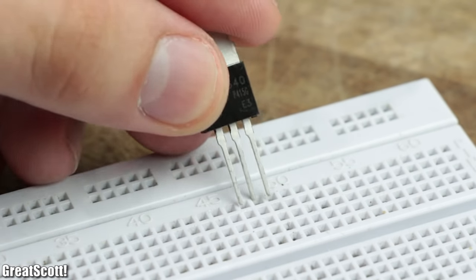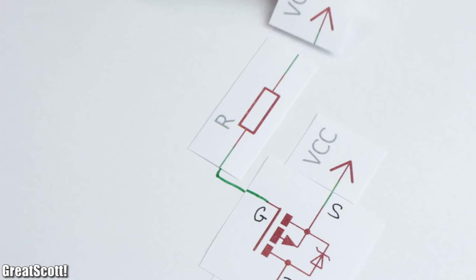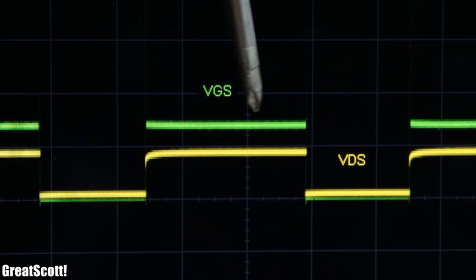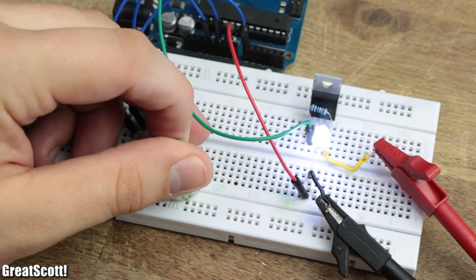But a much easier solution would be to use a P-channel MOSFET. The only difference is that we would need a pull-up resistor instead of a pull-down, because this time +5V turns the MOSFET off and 0V turns it on. Now that was the easy part, but let's kick it up a notch by connecting a bigger load.